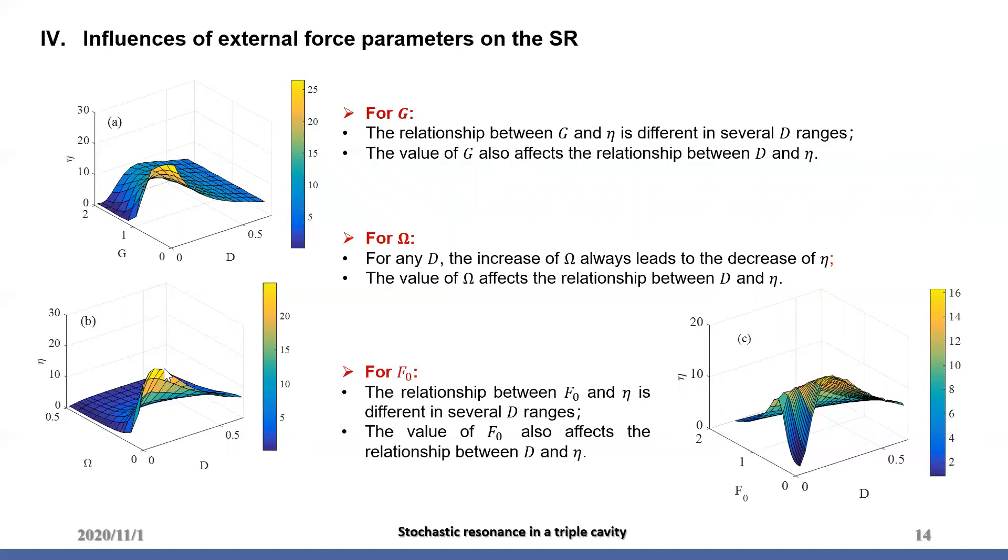Figure B is for omega. Here, for any D, the increase of omega leads to a decrease of eta, although the decreasing trend is obvious for smaller d and weakens for larger d. However, the value of omega affects the relations of D and eta. When omega is small, eta and D curve have a maximum. Then the influence of D will no longer be obvious.